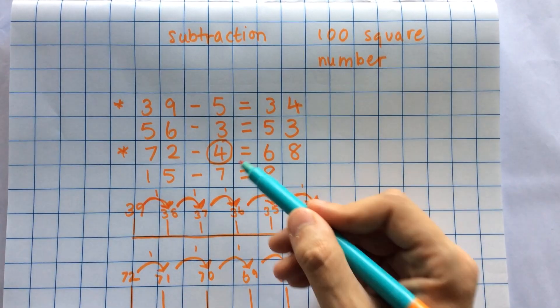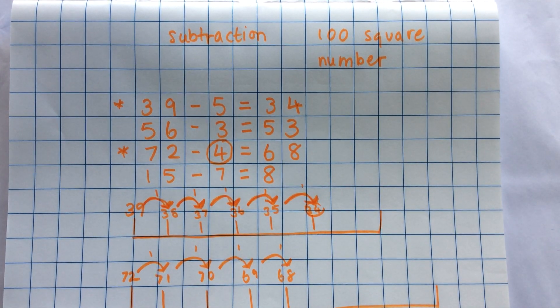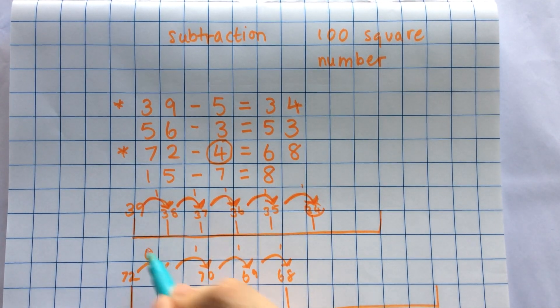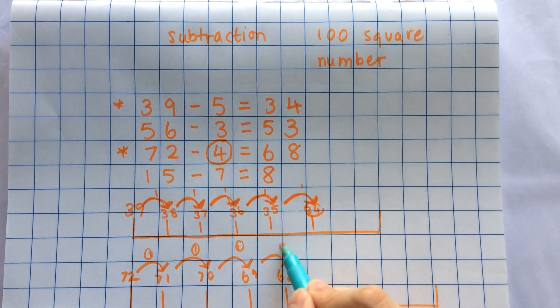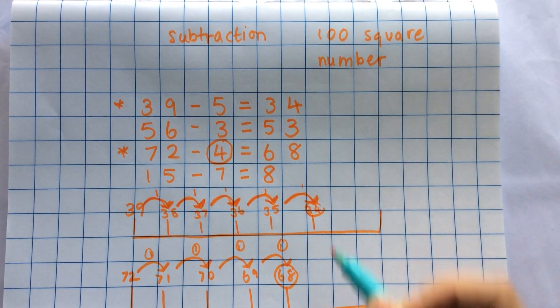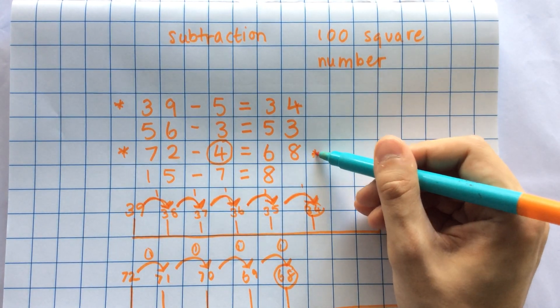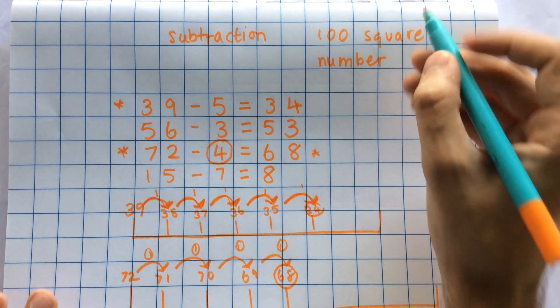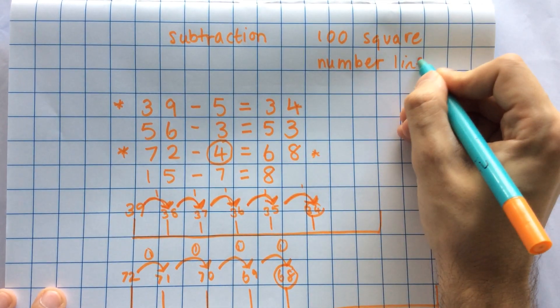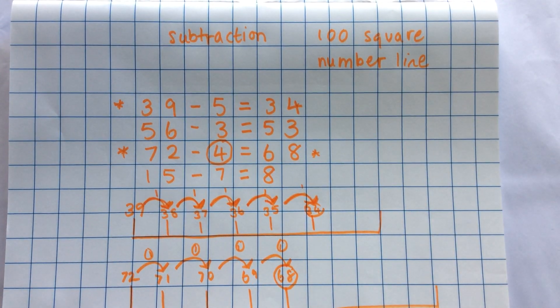And I need to check to make sure that I've done 4 jumps. Because that's the number I'm taking away. 1 jump, 2 jumps, 3 jumps, 4 jumps. And then my answer should be 68. Number lines and hundred squares are great for showing how you're working out your problems and also helping you to explain.